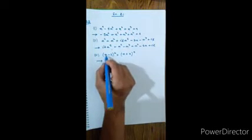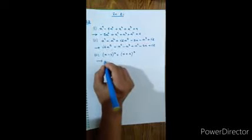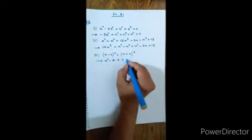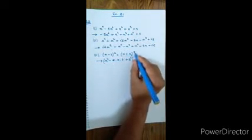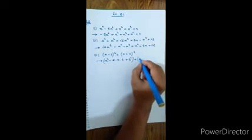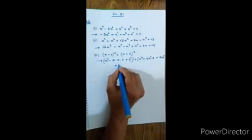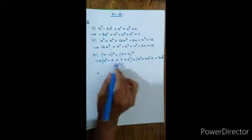Roman numeral 3: (x minus 3) whole square plus (x plus 2) whole cube. Using the formula: (a minus b) whole square equals a squared minus 2ab plus b squared. And (a plus b) whole cube equals a cubed plus 3a squared b plus 3ab squared plus b cubed.